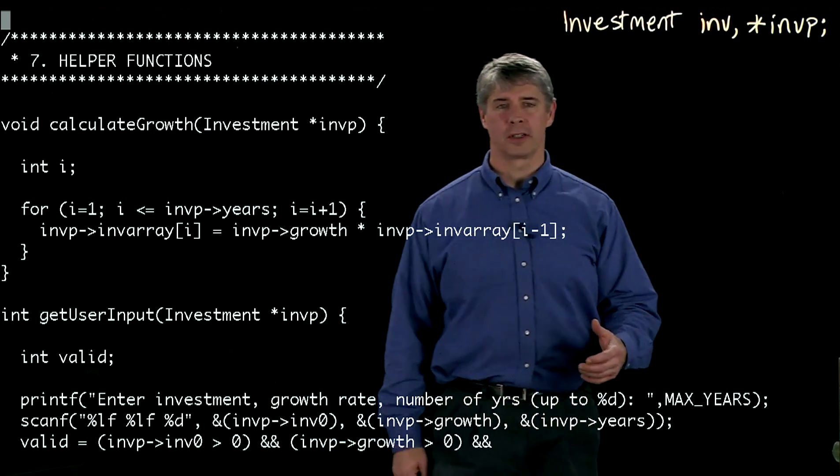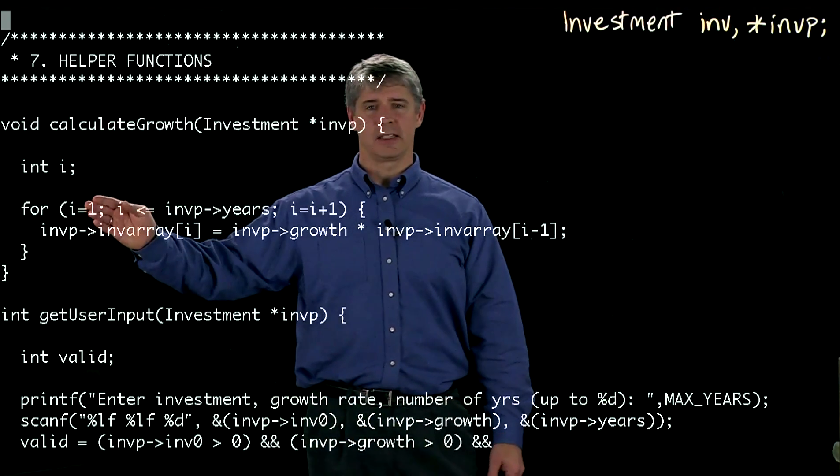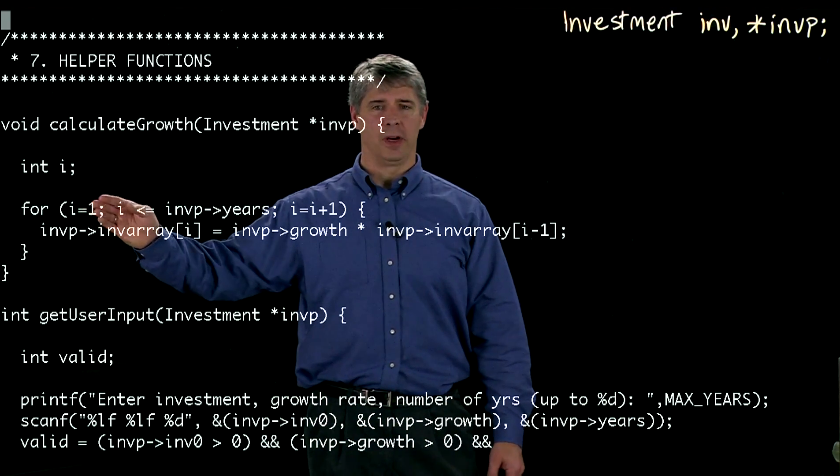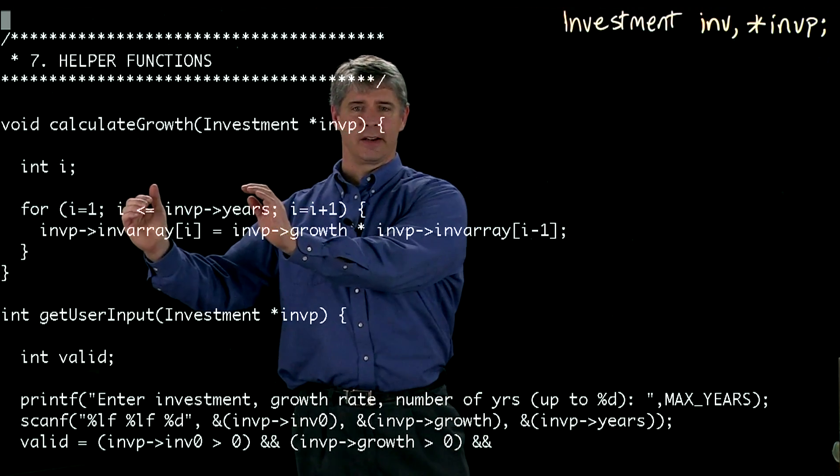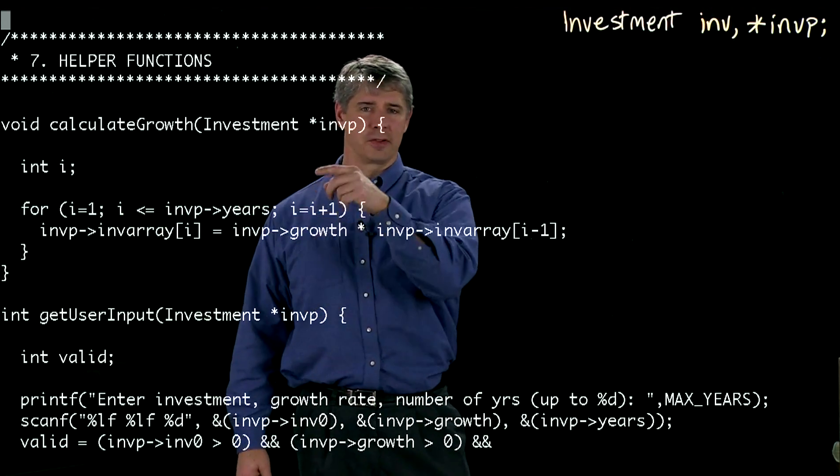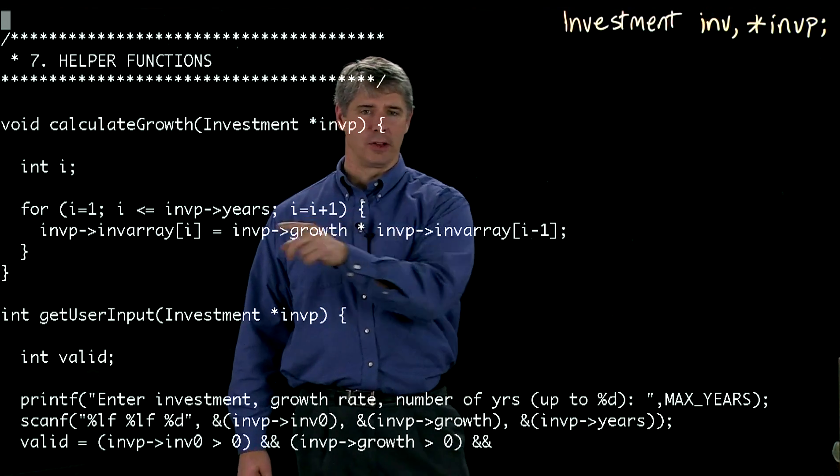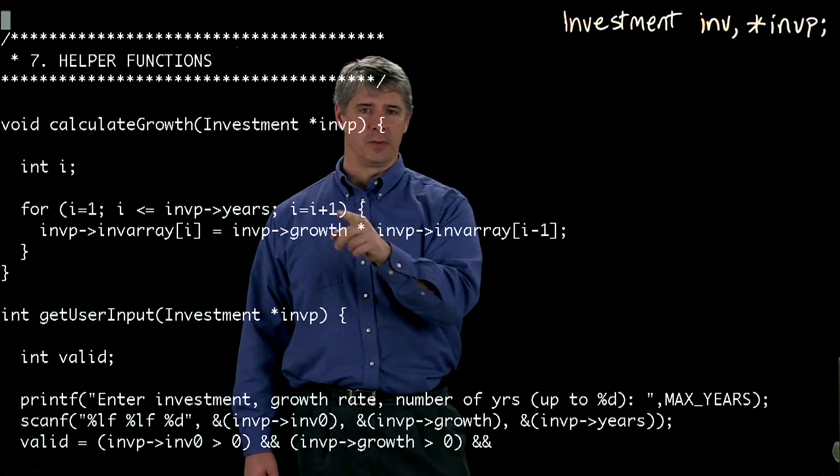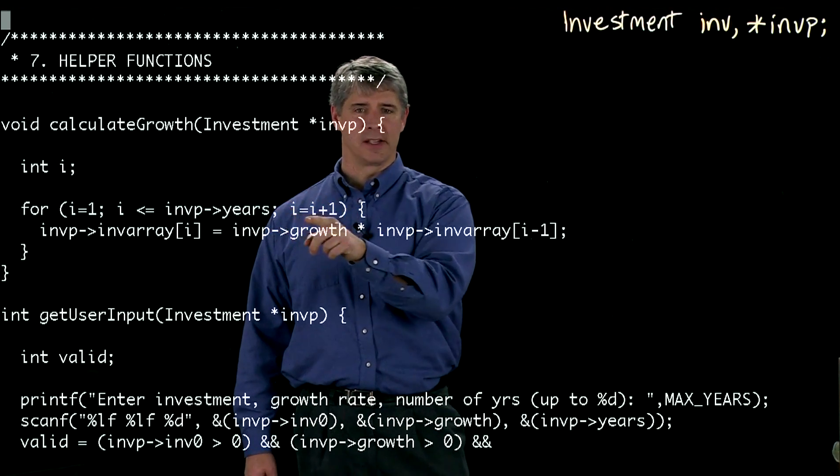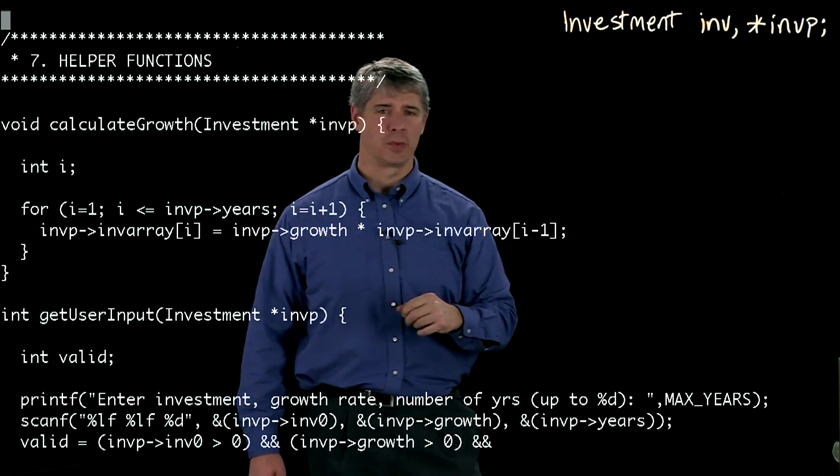And the way the for loop works is you initialize the counter here, i equals 1, you perform a test here, and if that test is true, you perform what's inside of the loop, and then once you exit the loop, you do the modification portion, which in this case adds 1 to i.